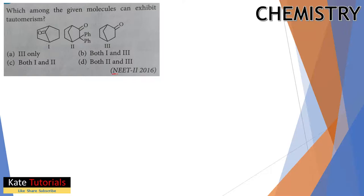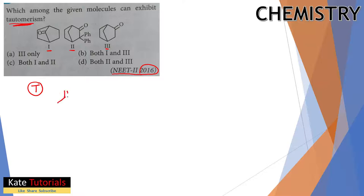This question is from NEET 2016. Which among the given molecules can exhibit tautomerism? They have given three molecules - one, two, and three - and we have to tell which among these will show tautomerism. Let us first understand what tautomerism is.